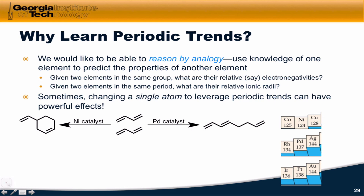Finally, why is it important to learn periodic trends? A very common pattern in chemistry is reasoning by analogy. We want to use data, experiments, and knowledge we already have to make predictions or construct hypotheses about future experiments. We want to use knowledge of one element to predict the properties of another — for example, given two elements in the same group, what are their relative electronegativities? Given two elements in the same period, what are their relative ionic radii? These are the kinds of questions that periodic trends can help us answer. Sometimes changing a single atom to leverage periodic trends can have powerful effects.